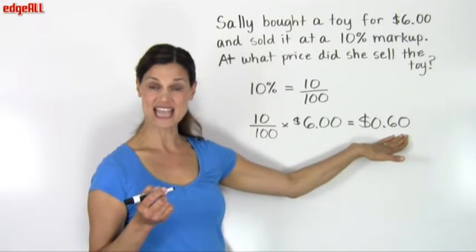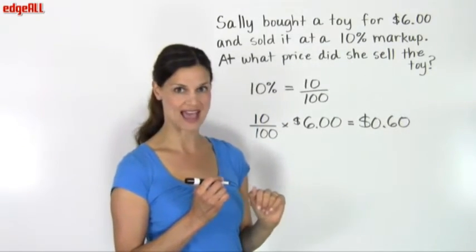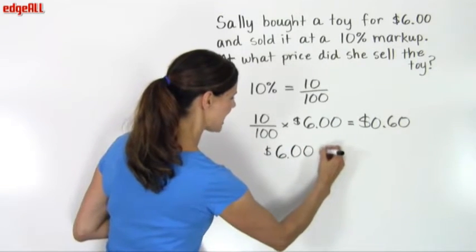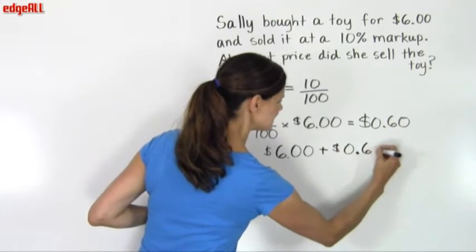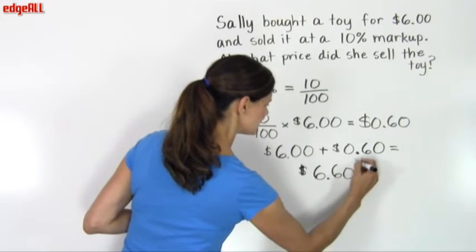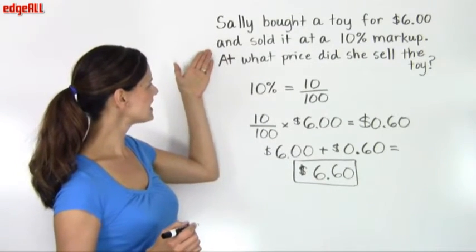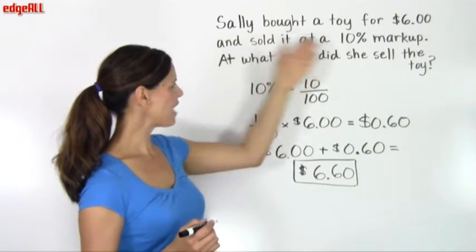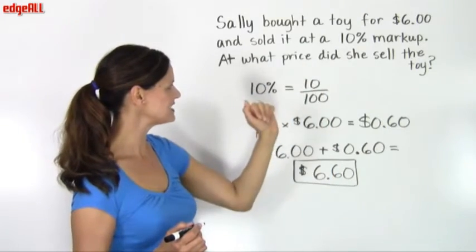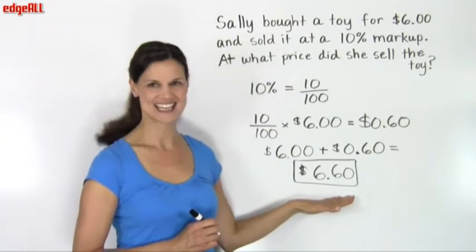Now we need to still take this $0.60 though, and add it to the $6, so that we can find the price that she sold the toy at. So now we take our $6, and we add to that $0.60, which equals a total of $6.60. So Sally bought a toy for $6, selling it at a 10% markup. We found that 10% of $6 is $0.60, and then we're asked at what price did she sell the toy. She sold the toy for a total of $6, plus $0.60, or $6.60.